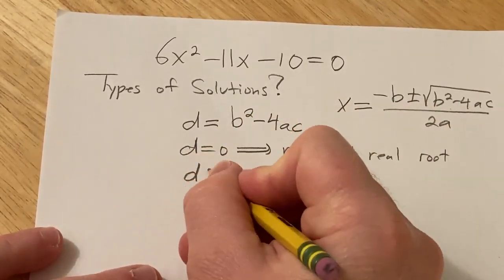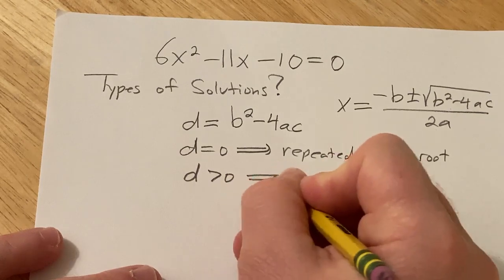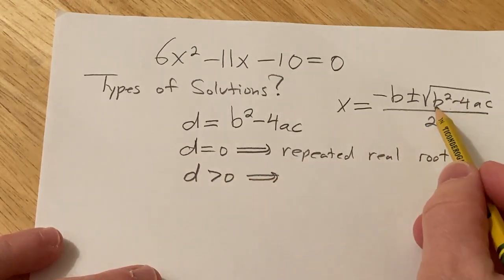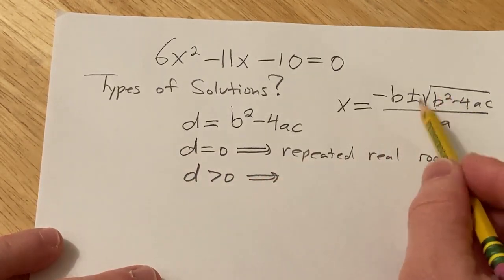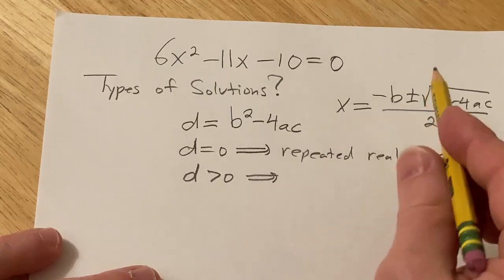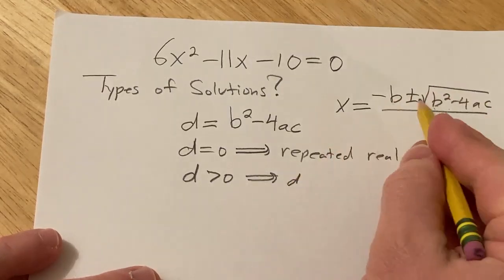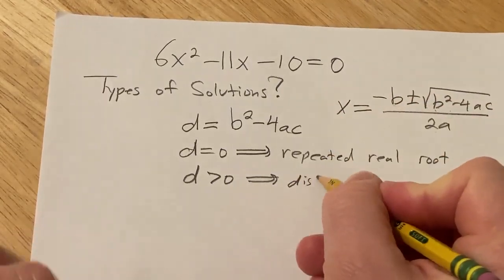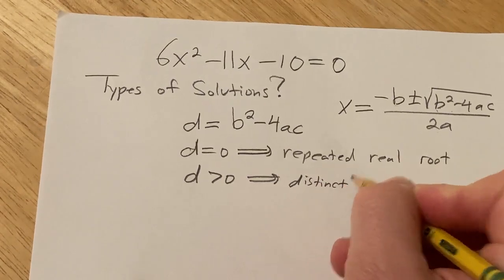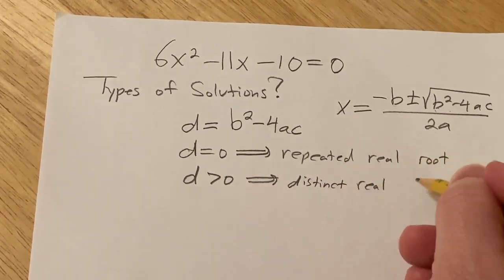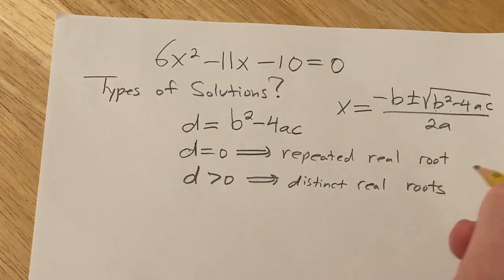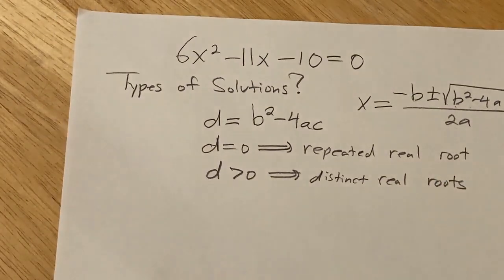And if d is positive, so like maybe it's 5 or maybe it's 4, you're going to get a positive number so you're going to get distinct real roots because you're going to get two of them because it's a plus or minus.